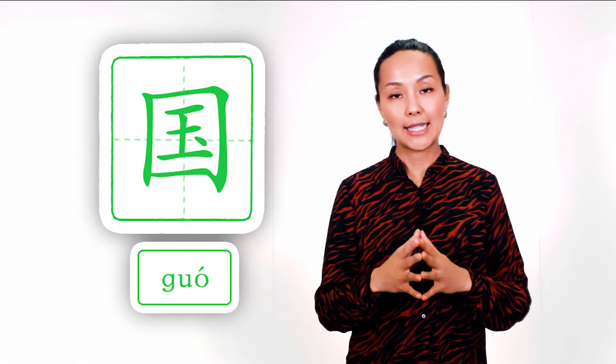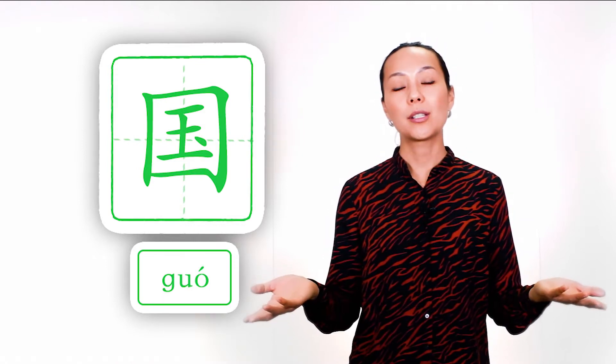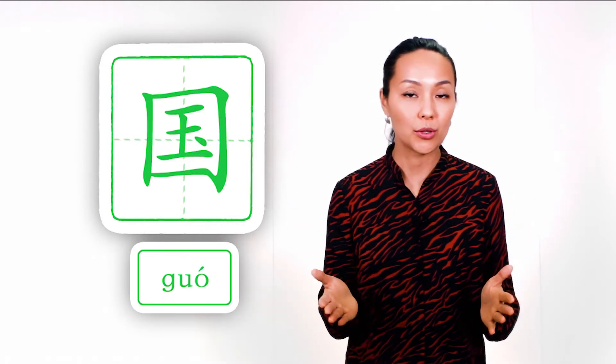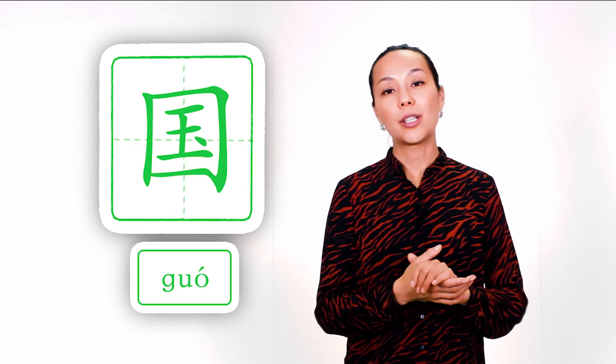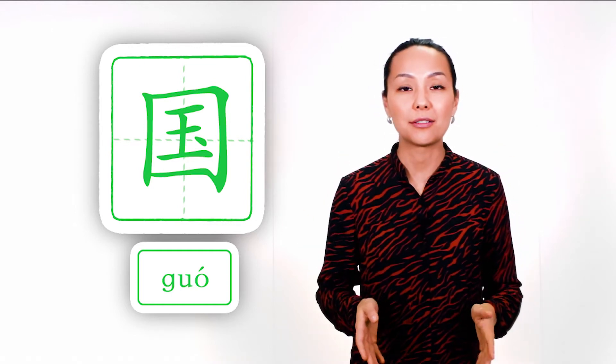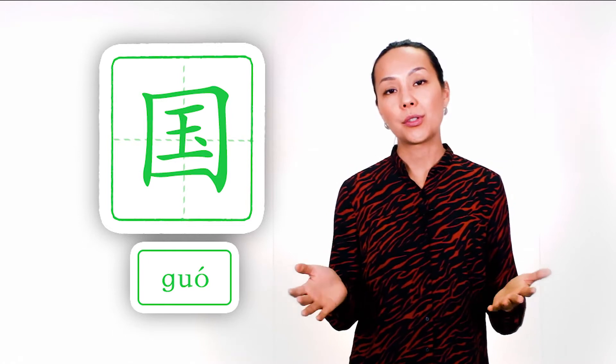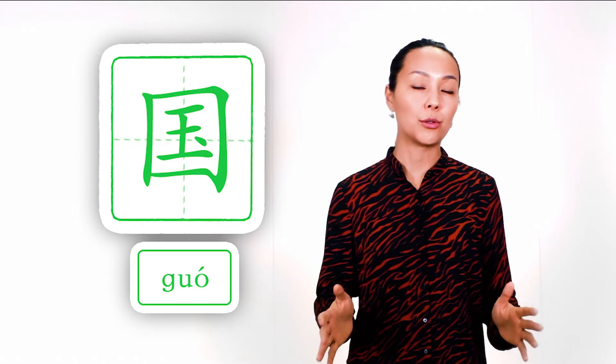And now let's study characters with this radical. The first example is the word country or state. Easy to guess. Each country has borderlines, that's why we have this radical. And inside of this character we have jade. Why? Because each country has its own jade. First of all, people.